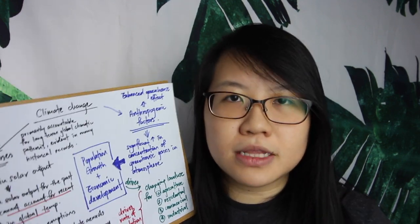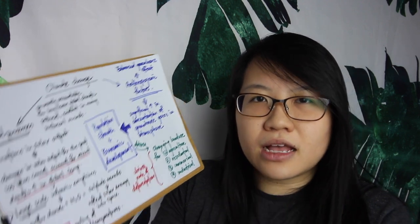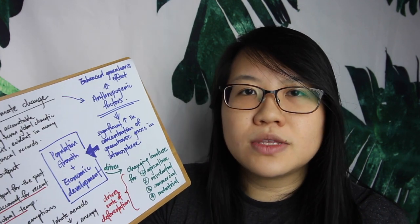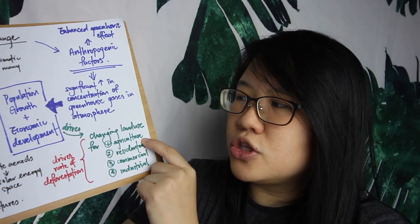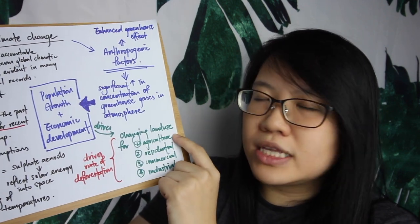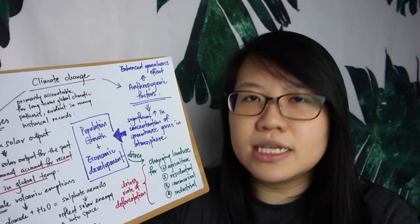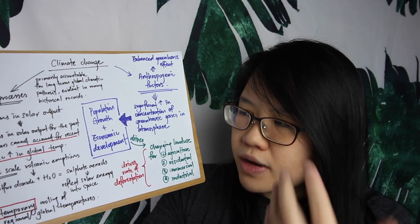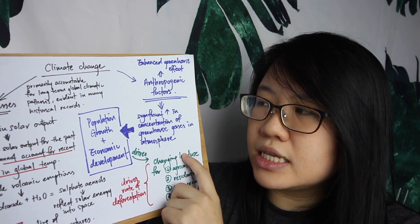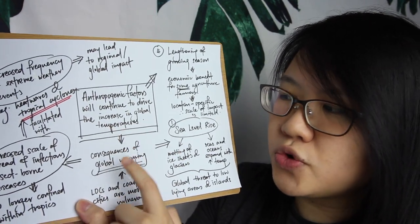Economic development is the second driver. Countries in Southeast Asia and the BRIC nations — Brazil, Russia, India, and China — are developing rapidly. People's disposable income and purchasing power increase drastically, so demand for different goods also increases. Lifestyles change: people consume more meat rather than staple food, driving the need to change land use to set aside greater amounts of land for agricultural purposes to cater to more affluent populations. Ultimately, deforestation and changing land use are driven by population growth and economic development.